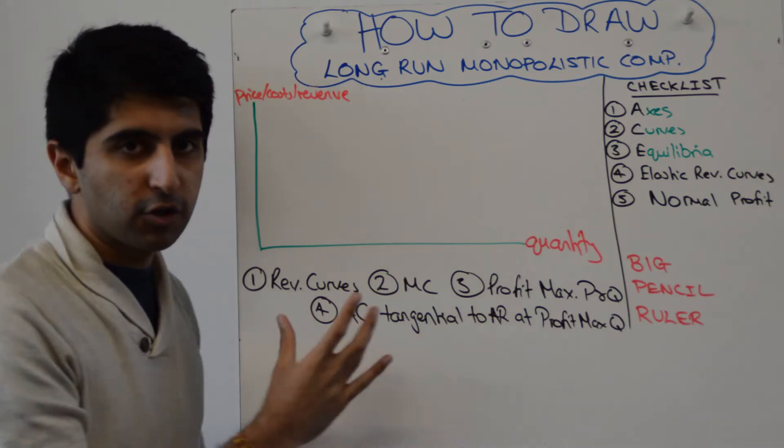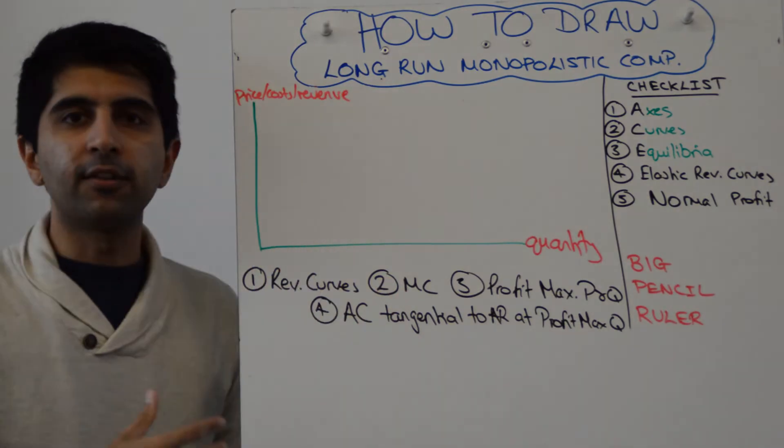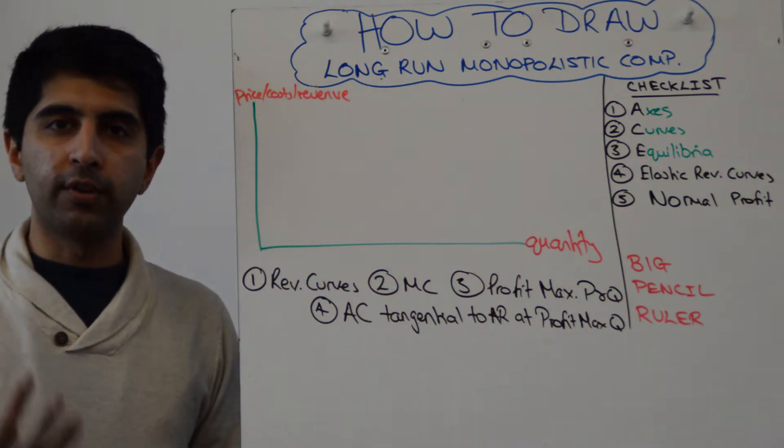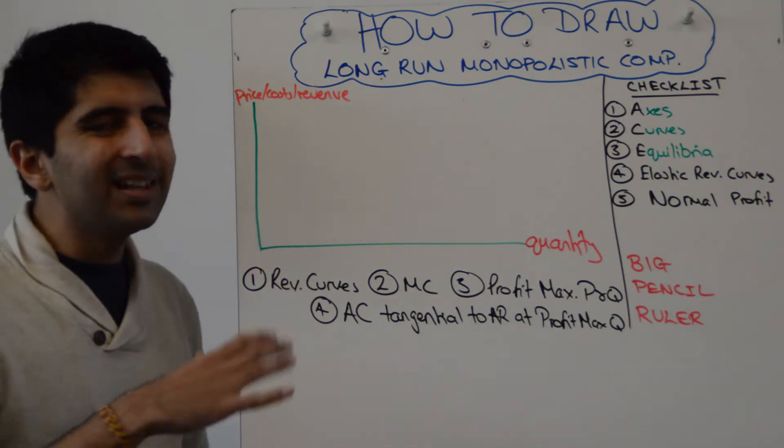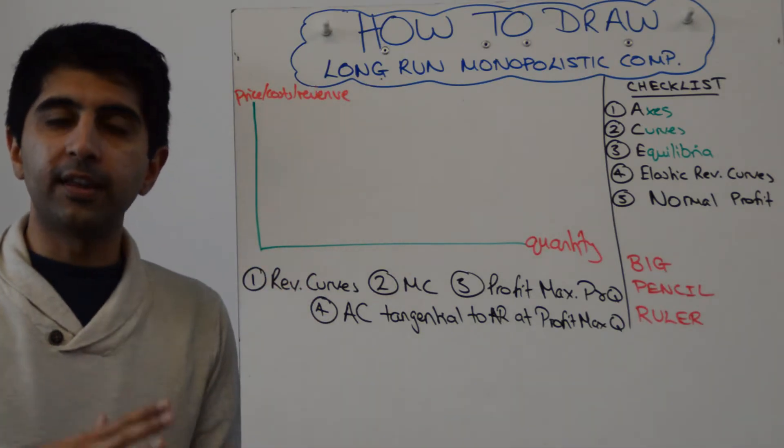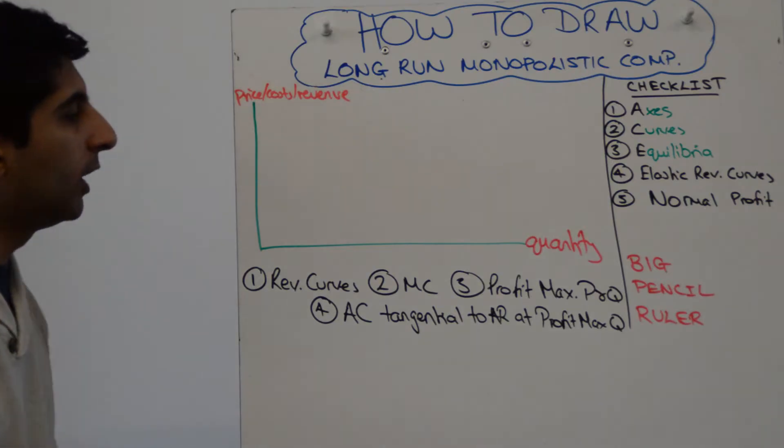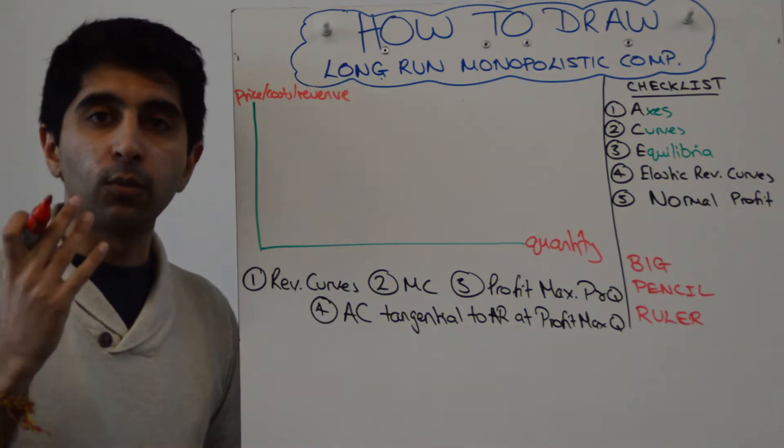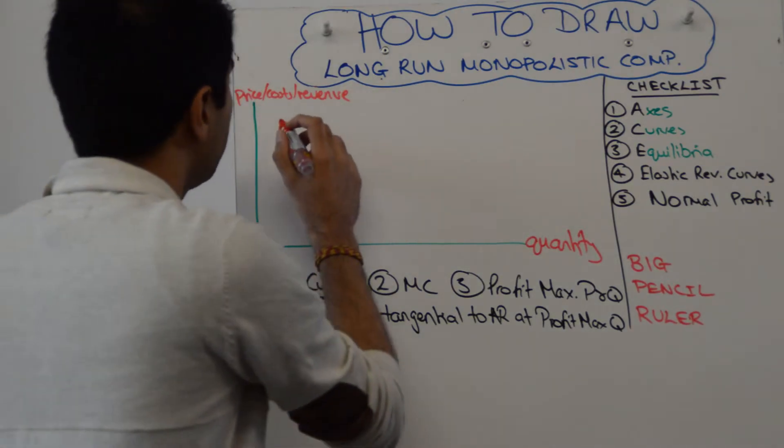It's useful having this little structure in mind—this little chain, this order of how to draw this diagram. It's like the monopoly diagram, but we have to draw a few different things in a different order than we used to.